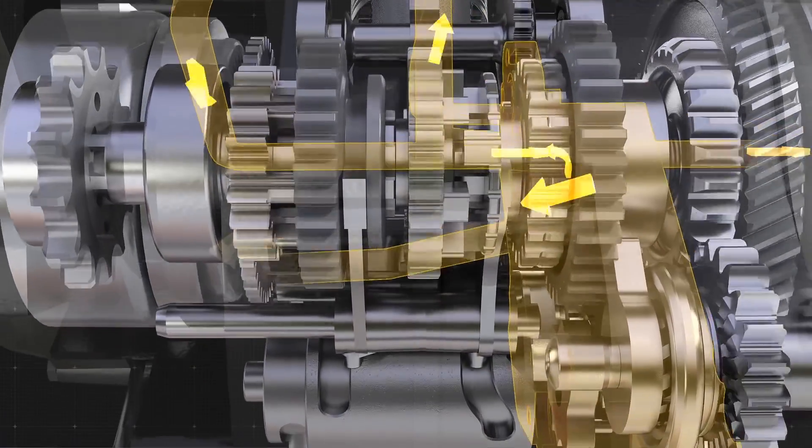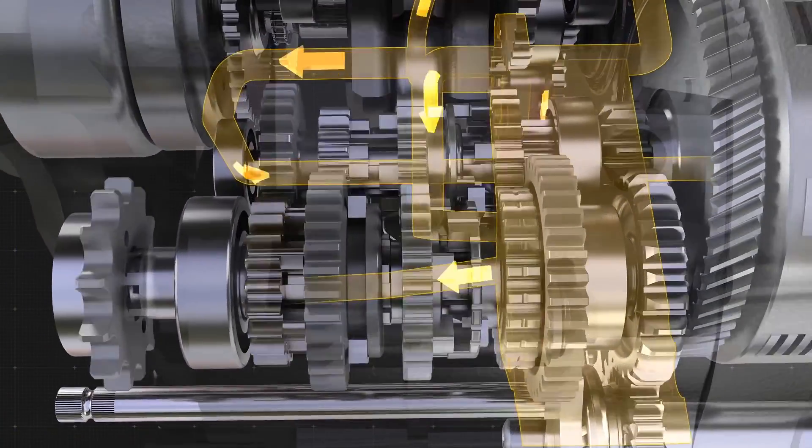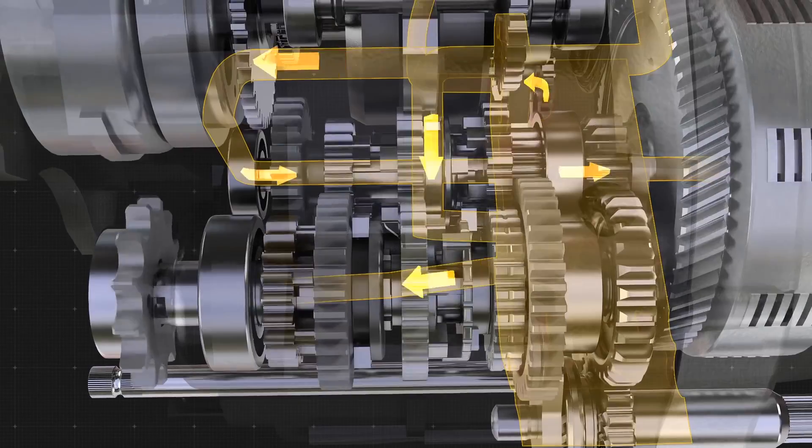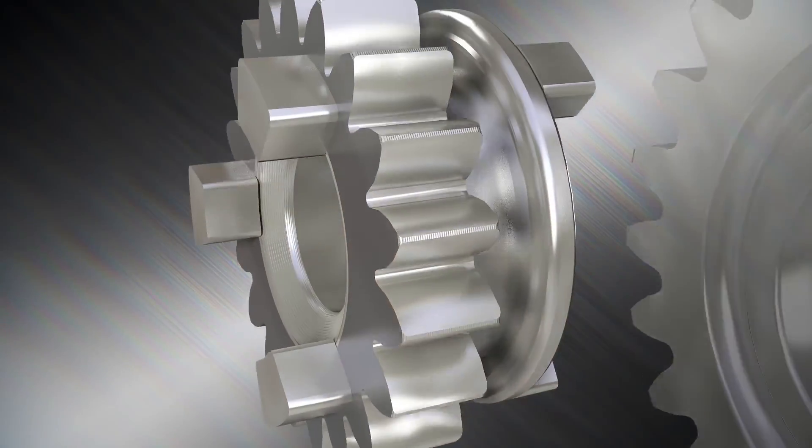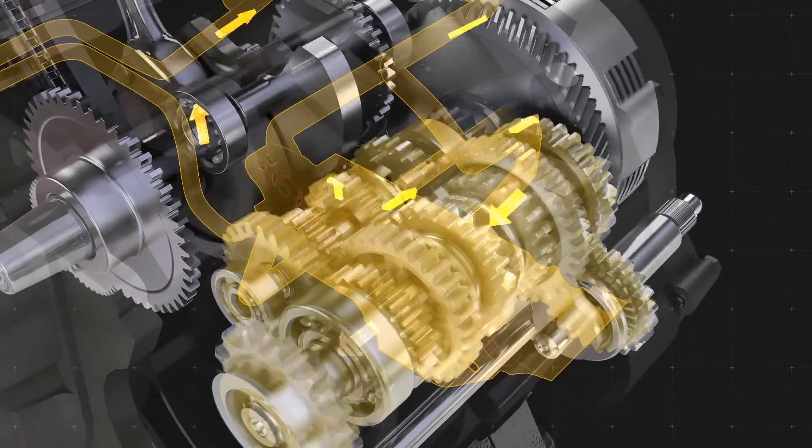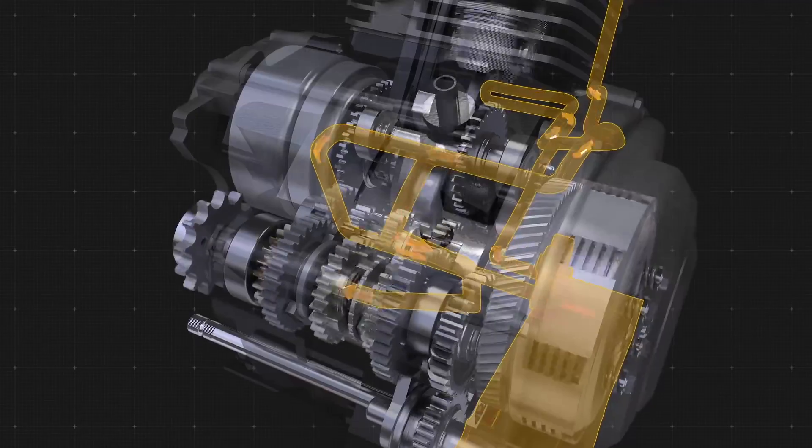That same oil also circulates through the gears, where the extremely high pressures and heat place even more demands upon it. Here, the oil must be able to absorb heat and help protect the gears against pitting and wear with a formulation that includes special anti-wear and extreme pressure agents.